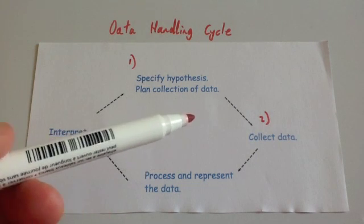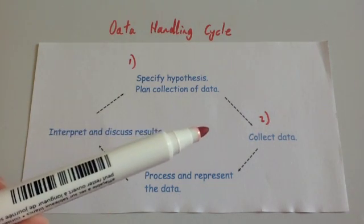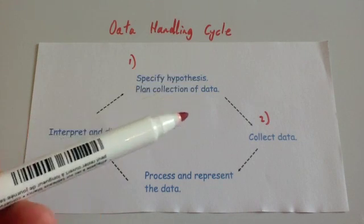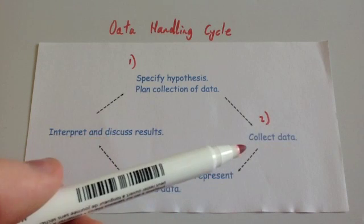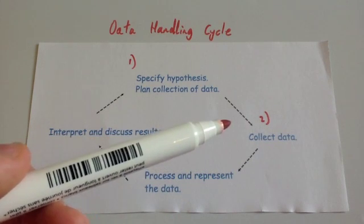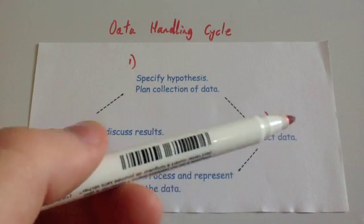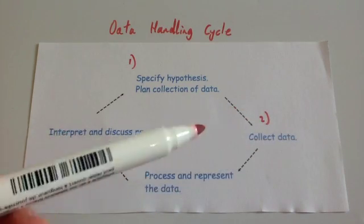So for instance, if it was on the reaction times again, you might want to make sure that the experiment's going to be fair. But actually whenever you're collecting it, you want to make sure that you're keeping everything fair, and that there's going to be no bias introduced. So stage two is collecting your data.